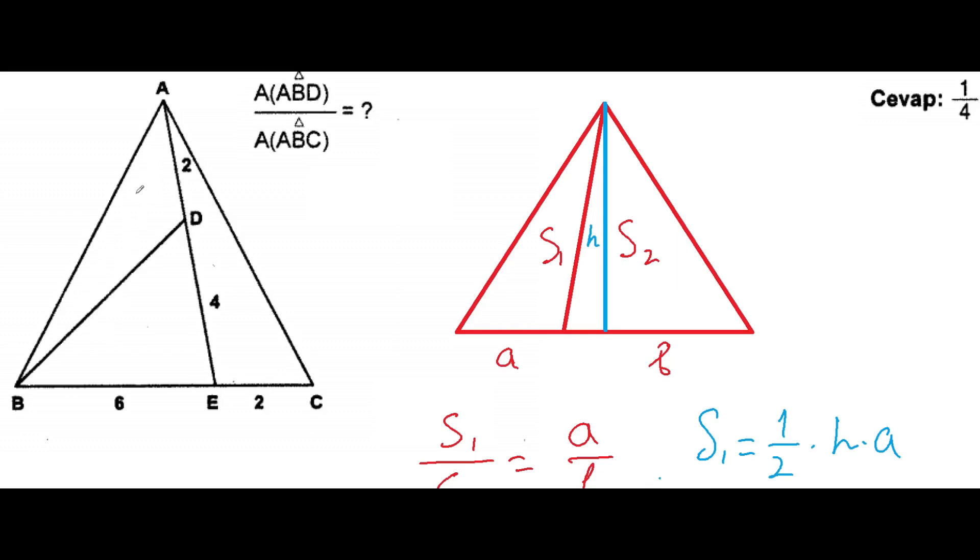Okay, if we will say that this area of this triangle ABD will be S, this area will be 2S because the ratio of the triangle is...